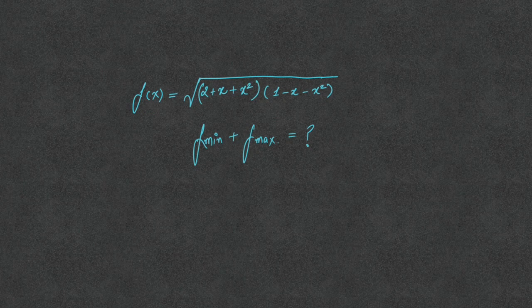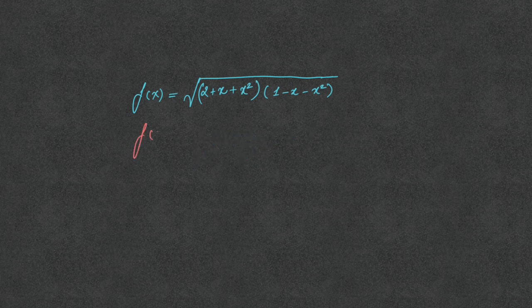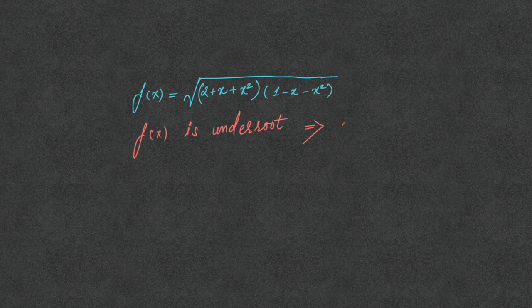f of x is equal to the square root of (2 plus x plus x squared) into (1 minus x minus x squared). We need to find f(minimum) plus f(maximum). Since f(x) is a square root function, its range is always greater than or equal to 0, therefore f of minimum is always 0.